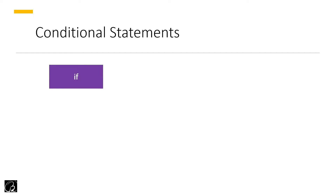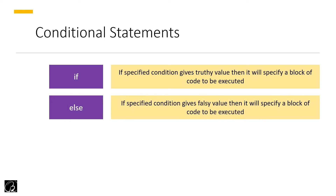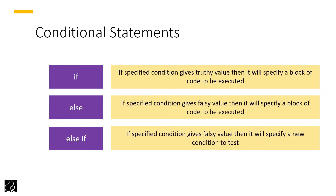In JavaScript we have conditional statements like other languages. First we have the if statement — if the specified condition gives you a truthy value, it specifies a block of code to be executed. We have already discussed truthy and falsy values. Then we have the else statement — if the condition gives a falsy value, it executes a different block. Then we have else-if — if the condition is falsy, it specifies a new condition to test.